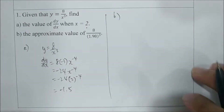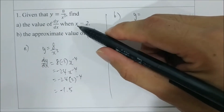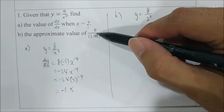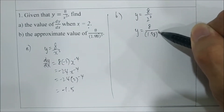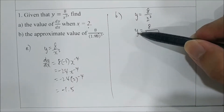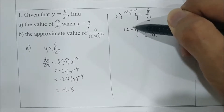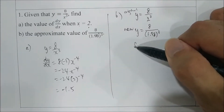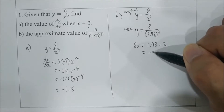Now for question B, find the approximate value. If you compare, you can see y when x equals 2 in the first part: y equals 8 over 2 to the power of 3. Given 8 over 1.98 to the power of 3, if we let y equal 8 over 1.98 to the power of 3, the original y has changed to the new y when x changed from 2 to 1.98. So sigma x equals new x minus old x, which is negative 0.02.